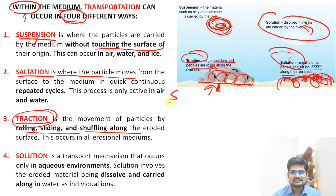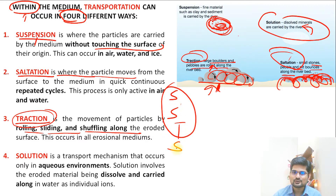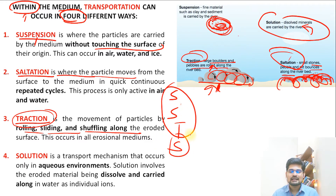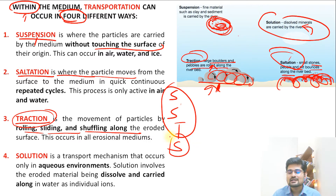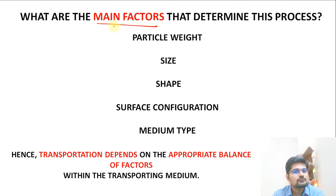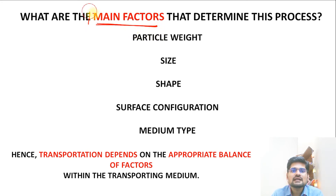So these four modes — suspension, saltation, traction, and solution — can be remembered as SSTS, like SST in social studies. These processes are the key modes of transportation within a medium.